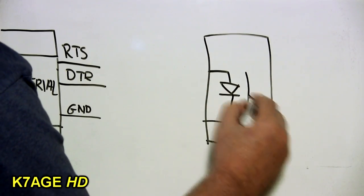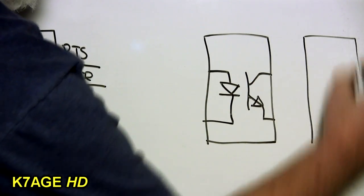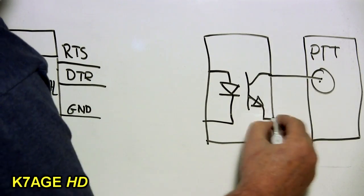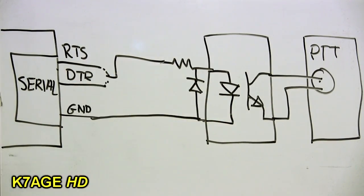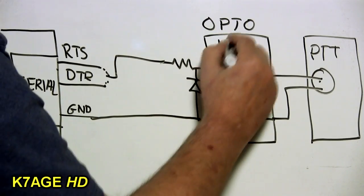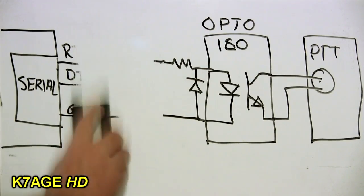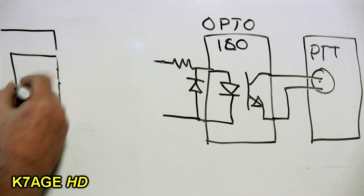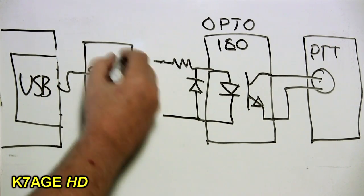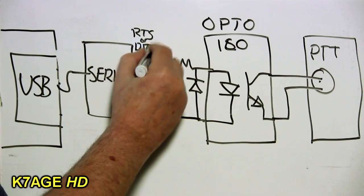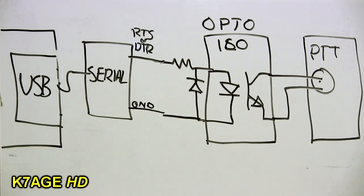So a method to generate push to talk for the radio is by using a serial port on the computer with either the RTS or the DTR command pins through an opto isolator switch connected to the push to talk input on the rear of the radio. The opto isolator also provides ground isolation. Most computers don't have a serial port anymore so you can use an external USB to serial port dongle.